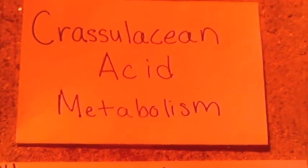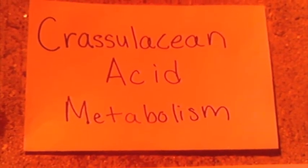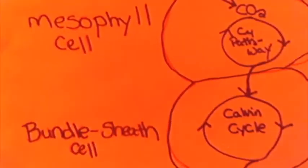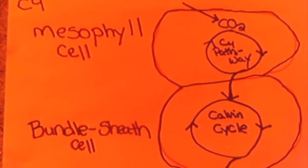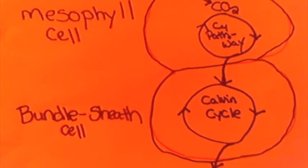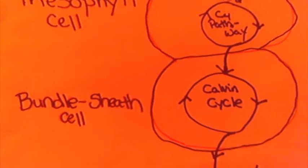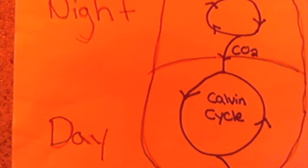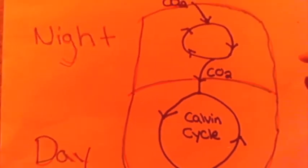Crassulacean coming from the name of the plant families that use CAM photosynthesis. In C4, the mesophyll cell and the bundle sheath cell work together to use the C4 pathway and the Calvin cycle to make their glucose sugars. But in CAM photosynthesis, there's one cell that is used day and night.